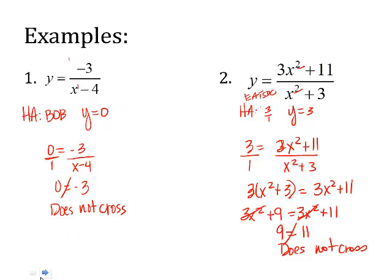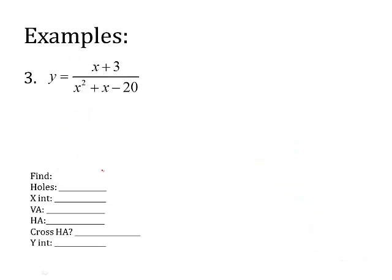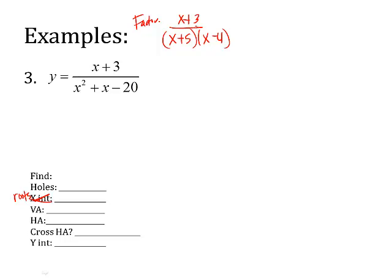Now let's do an example that does cross. I'm given a rational function and I need to run through the key features. Starting with holes: factoring gives (x + 3) over (x + 5)(x − 4). There are no common factors, so there is no hole.